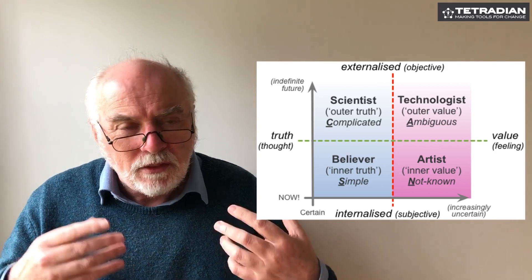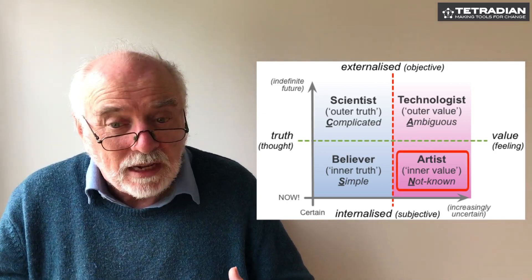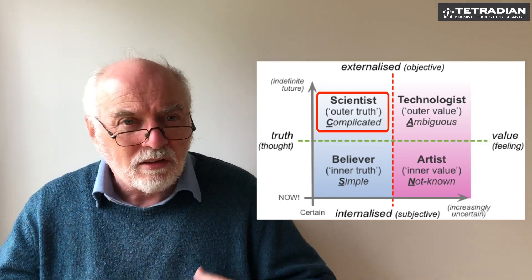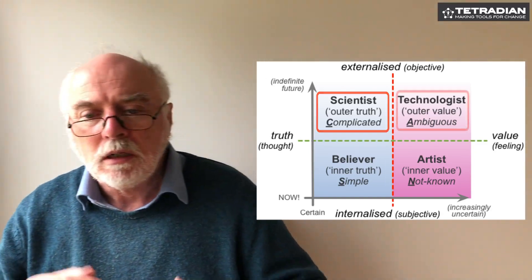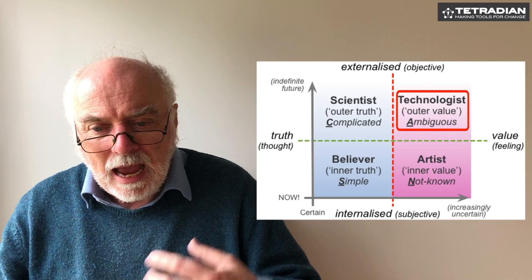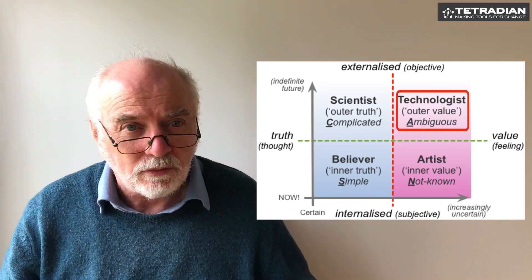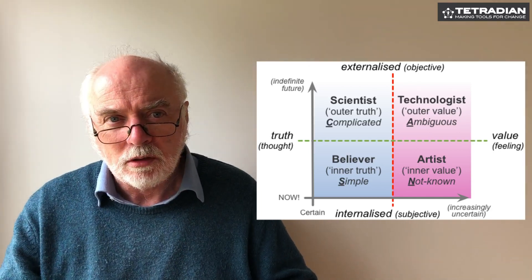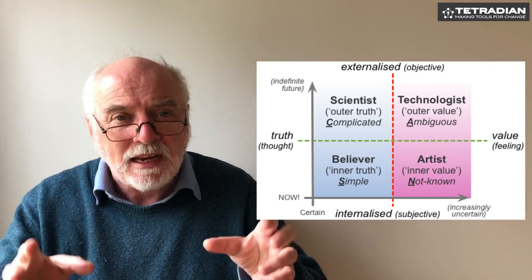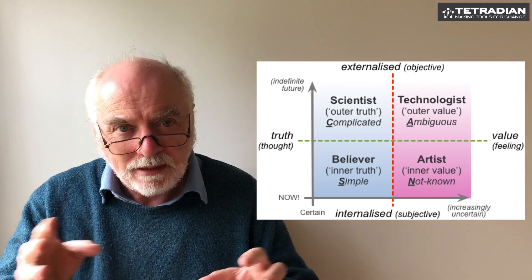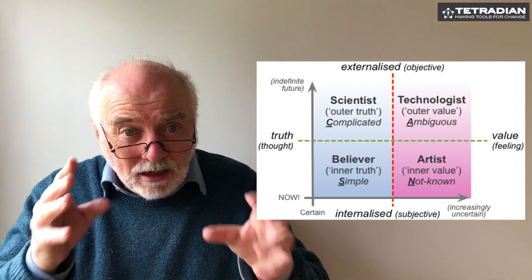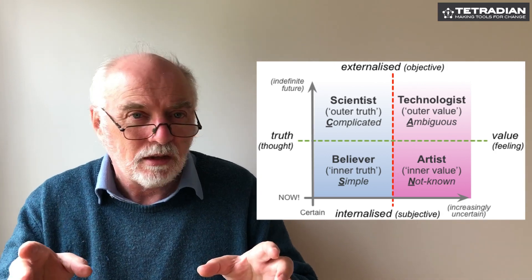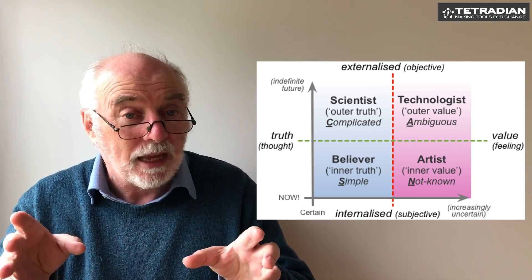So look at these different modes: the artist looking at inner value; the believer looking at inner truth; the scientist looking at the truth in the outer world; and the builder or engineer looking at outer value — the usefulness of things, rather than arguing about the truth. It's a useful little model to map out which mindsets we need dynamically. Because if we don't get the right one at the right time, that's when things start to go wrong. And we'll look at that in the next video.